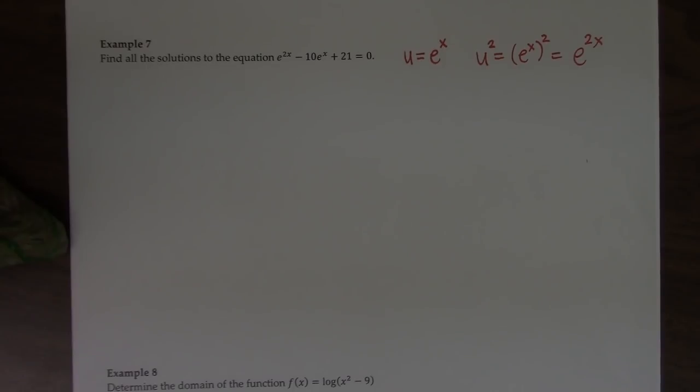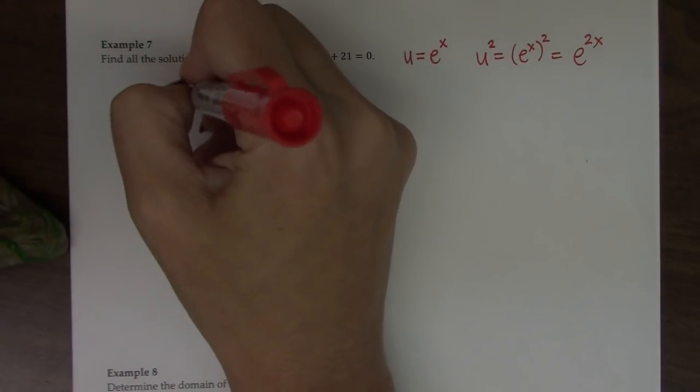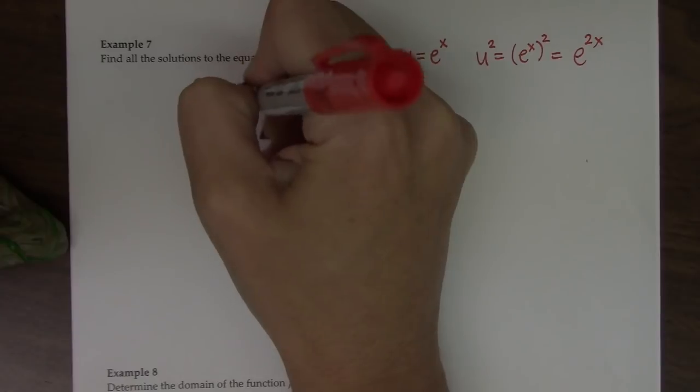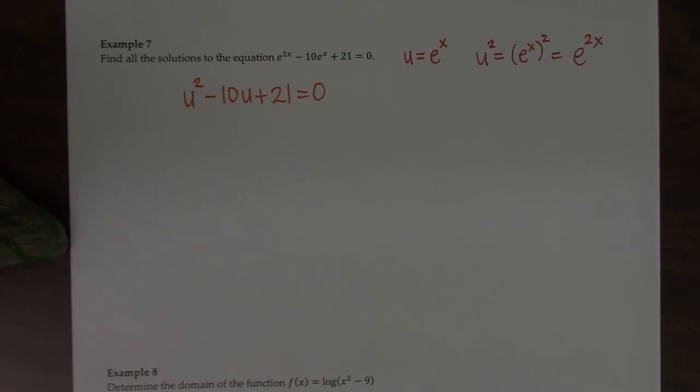So now I can rewrite this equation using this new letter. So e to the 2x is u squared minus 10u plus 21. And now it's really obvious that I have a quadratic. And this is a much easier equation to factor than in its original form.